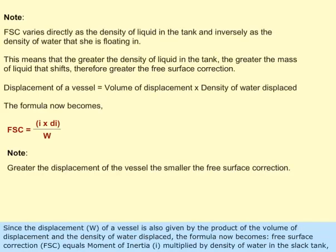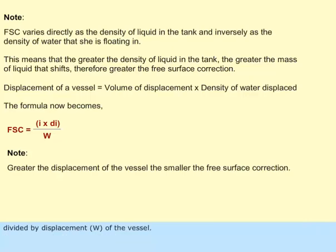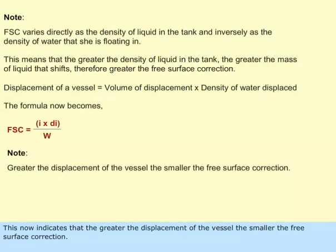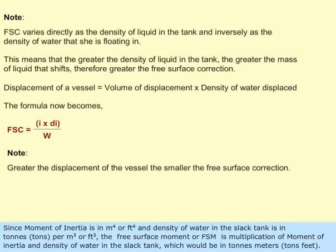Since the displacement W of a vessel is also given by the product of the volume of displacement and the density of water displaced, the formula now becomes: FSC equals moment of inertia I multiplied by density of liquid in the slack tank, divided by displacement W of the vessel. This indicates that the greater the displacement of the vessel, the smaller the free surface correction. The unit for moment of inertia is meters to the fourth power or feet to the fourth power, and density of water in the slack tank is in tons per meter cubed or feet cubed.